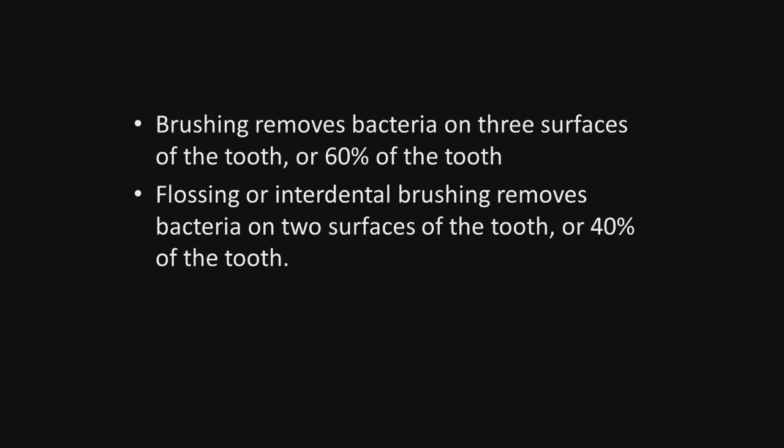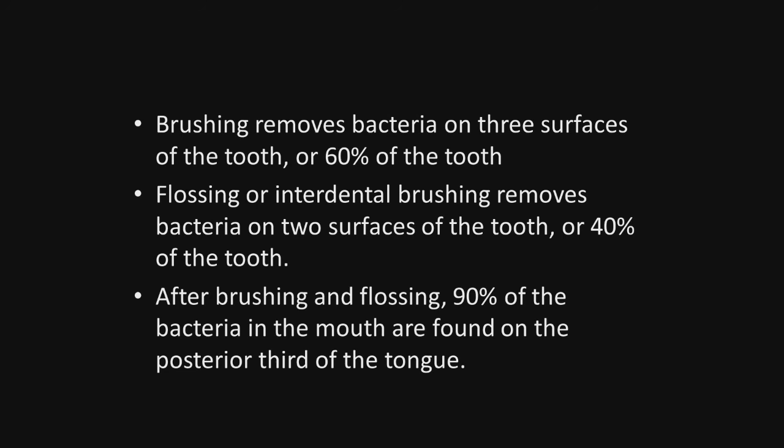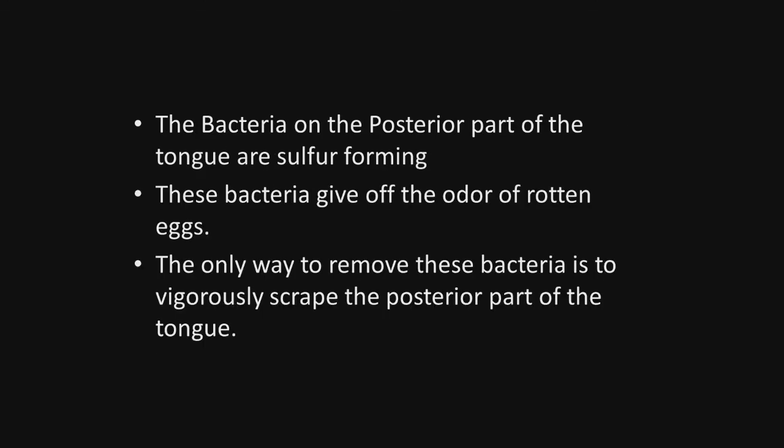So with thorough brushing and flossing, you can remove the bacteria on the teeth. But after brushing and flossing, 90% of the bacteria left in the mouth are found on the posterior third of the tongue, and that's where our problem is. The bacteria on the posterior part of the tongue are sulfur-forming bacteria. These bacteria give off the odor of rotten eggs, hence the problem with halitosis, mal-odor, and so forth.